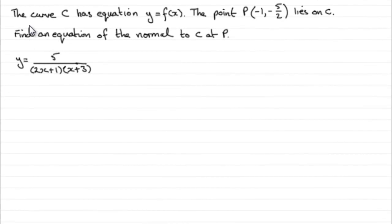In this last part, we're given that the curve C has equation y equals f of x and the point P is the point minus 1, minus 5 over 2, and it lies on C. What we've got to do is find an equation of the normal to the curve C at this point P.